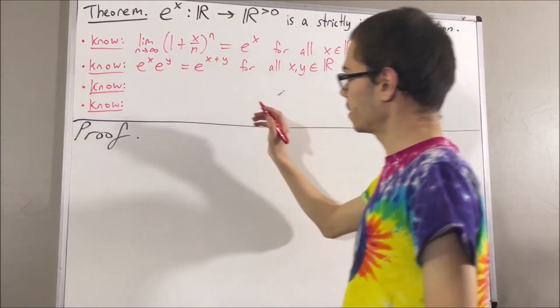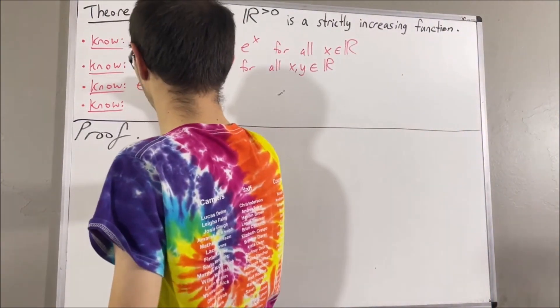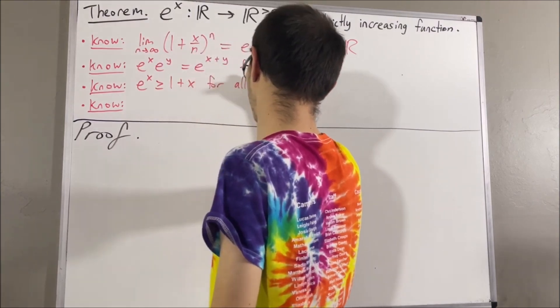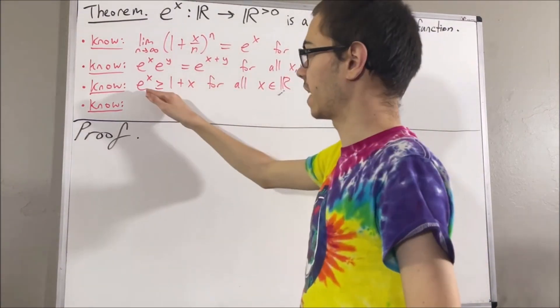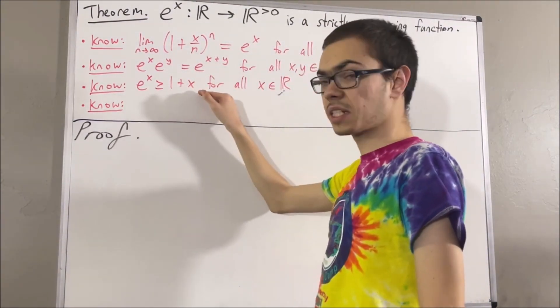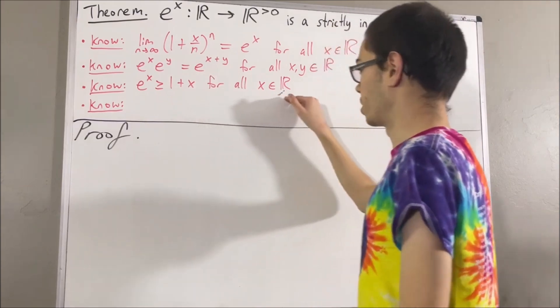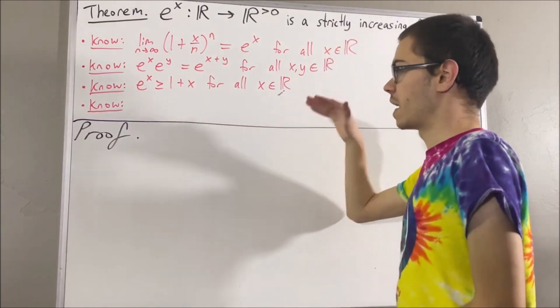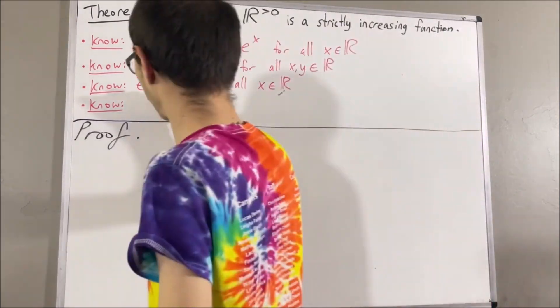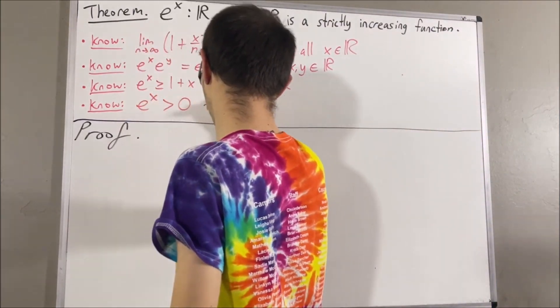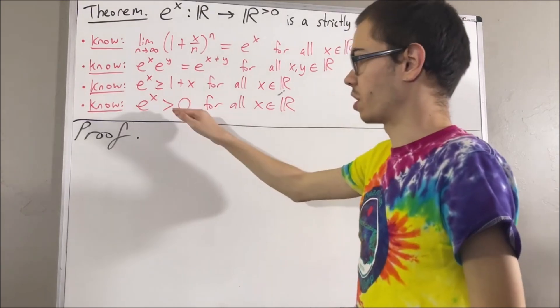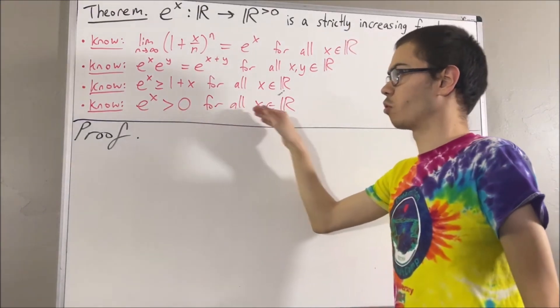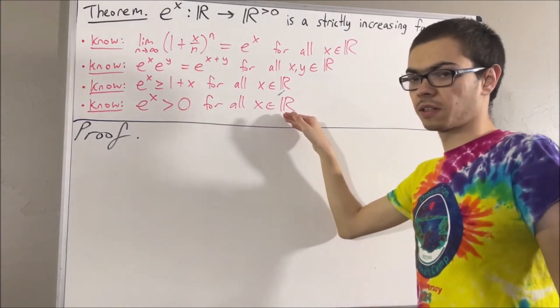Second, e to the x is greater than or equal to 1 plus x, for all real numbers x. And third, e to the x is greater than 0 for all real numbers x.